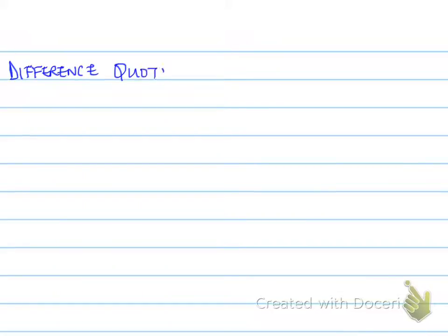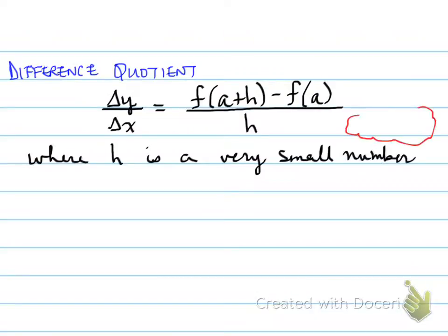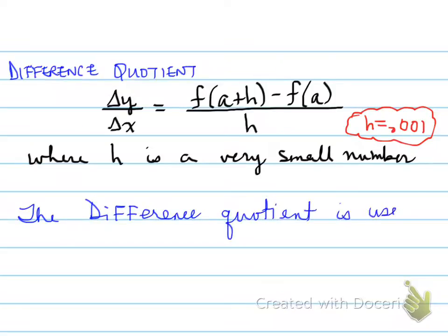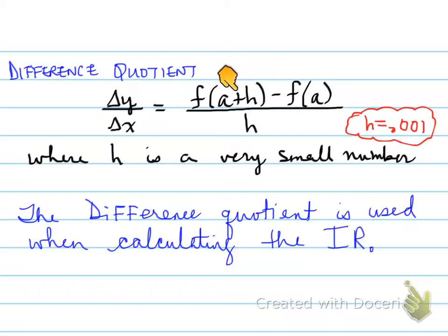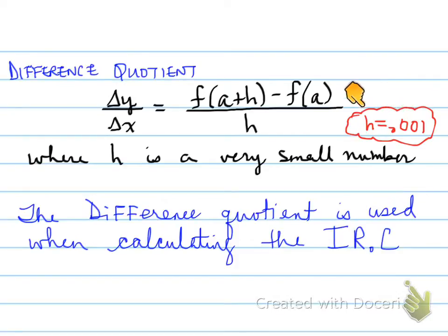Now, the difference quotient — this is a formula you'll need to memorize. The difference quotient is used to determine slope at a very, very small interval: f at a plus h minus f at a, all over h. If you compare this to the three intervals, you'll note that this is the following interval. We use the difference quotient to calculate the instantaneous rate of change. The IROC uses a very, very small interval, say 0.001, and the difference quotient to calculate it.